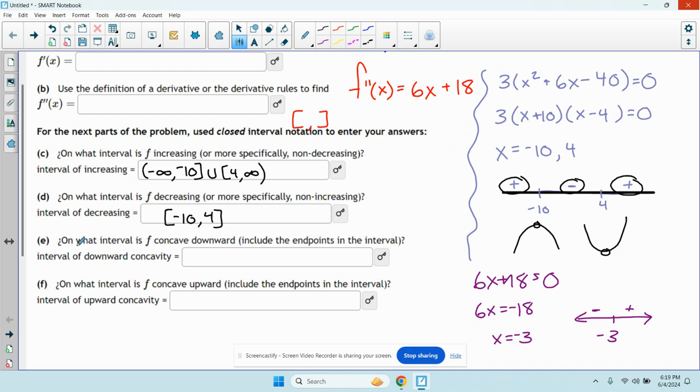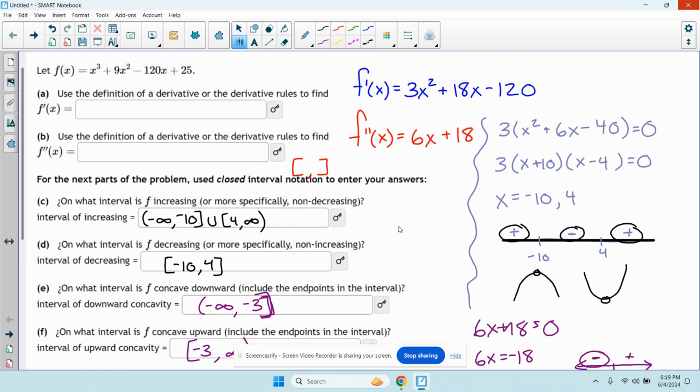So my interval, f is concave down everywhere where the second derivative is negative. So from negative infinity, open parenthesis, to negative 3 bracket. And it's concave up from negative 3 to infinity. And that's it.